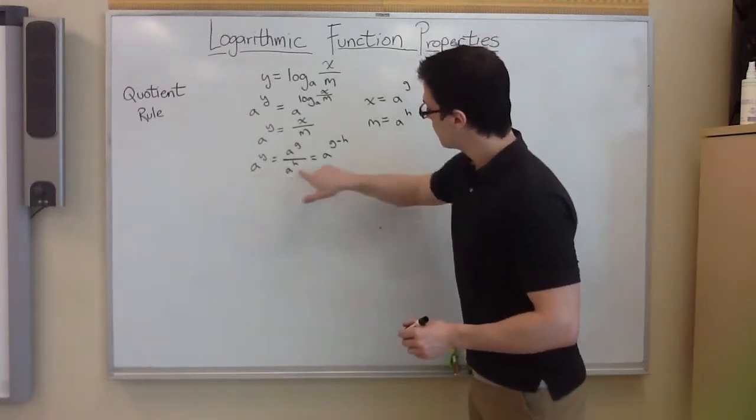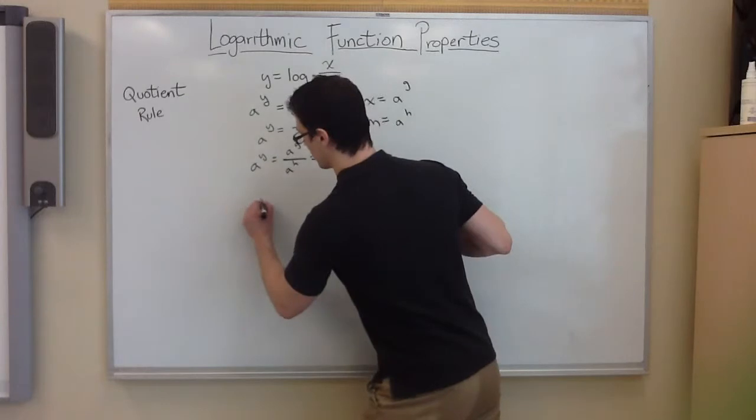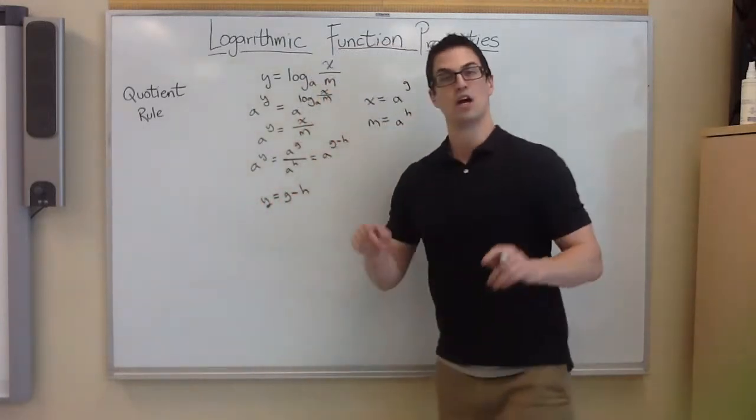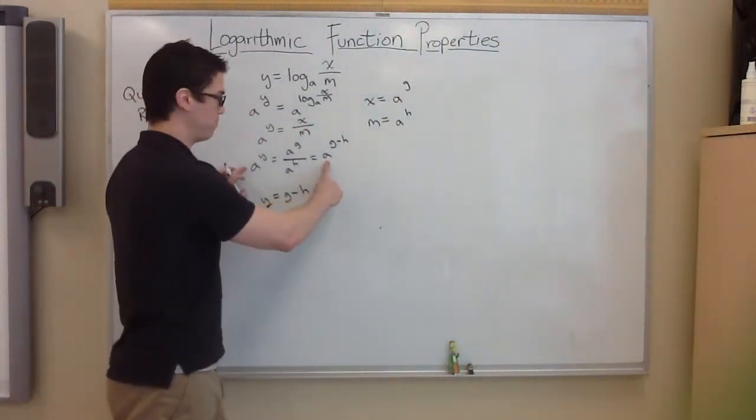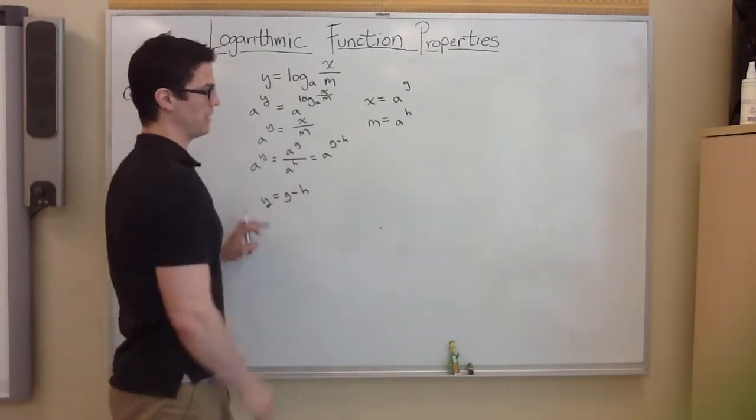From here, we're going to take the log base a of both sides, which gets rid of this a and which gets rid of this a, so you end up with y is equal to g minus h. Again, basic property of exponential functions. If I take the log base a of both sides of this, the a's cancel, and you're left with y equals g minus h.